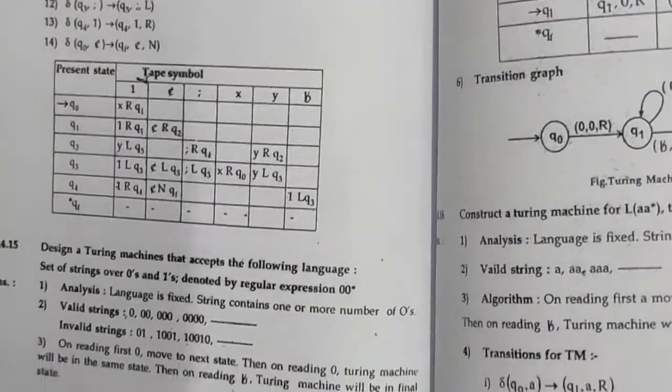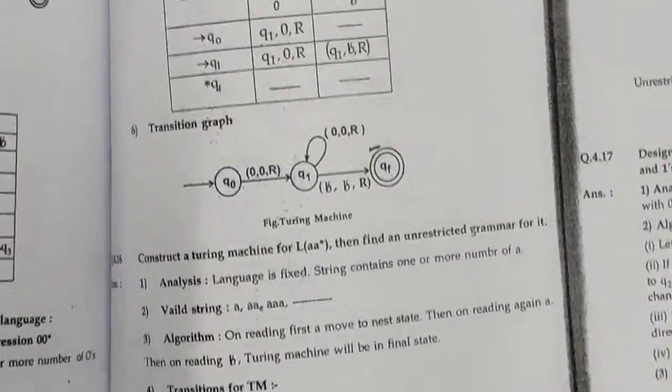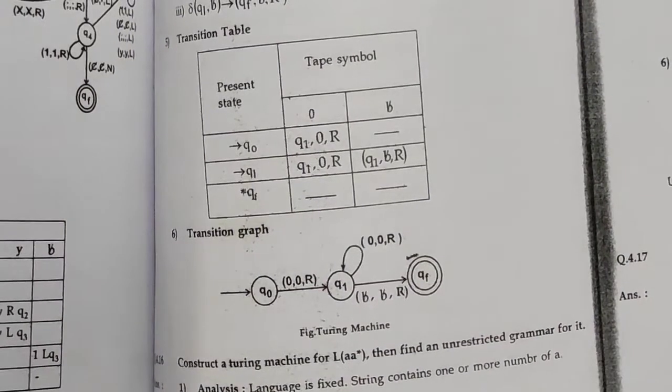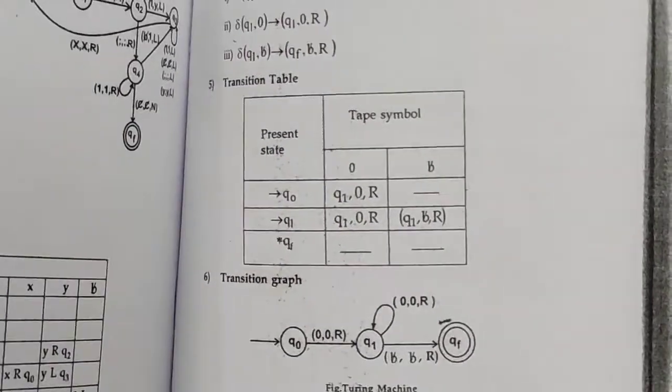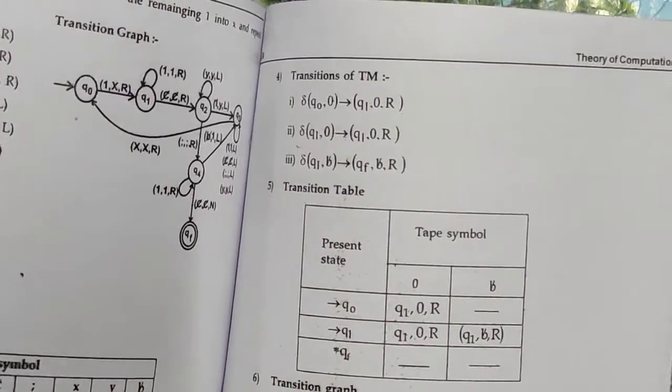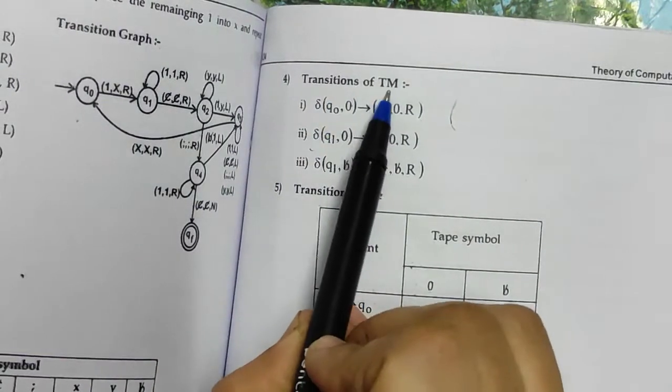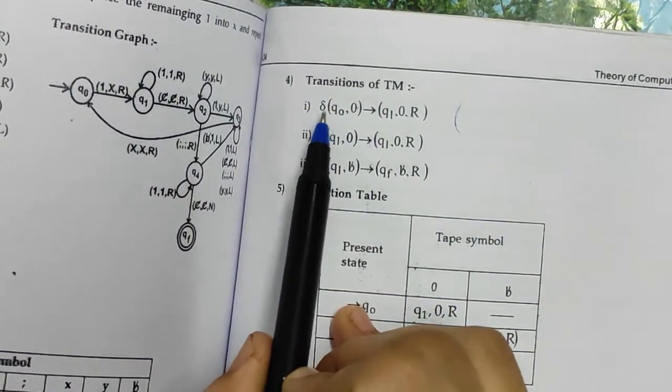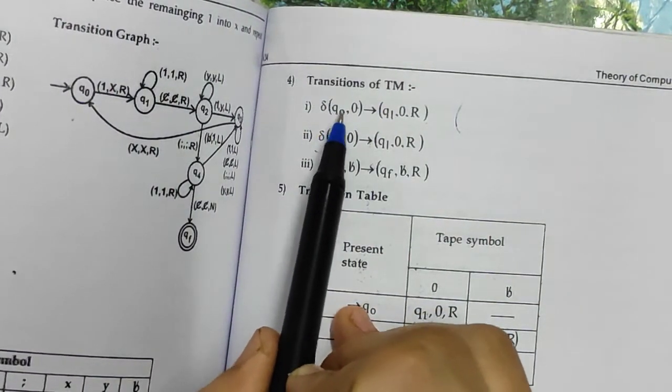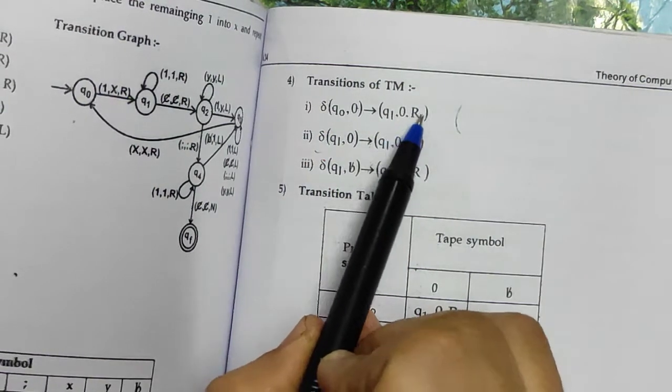So this is the transition graph for the Turing machine for regular expression 00*. The transitions of this machine are represented as follows: for q0 with 0 input, we will move to q1 with 0 and right direction.